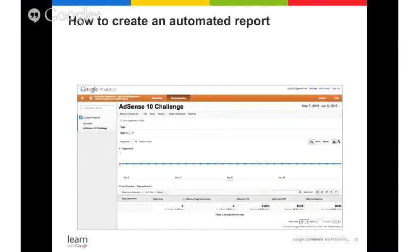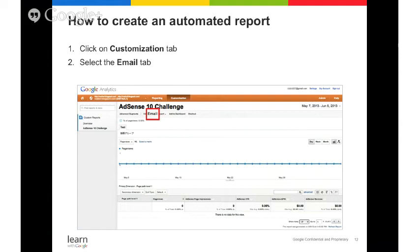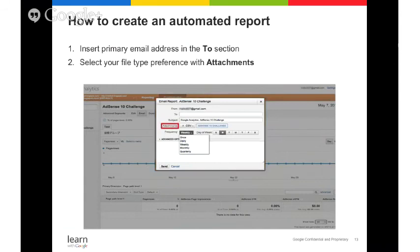There are two ways to set up report automation. The first is to use the custom report notification. Go to Customization and then click the Email tab. A new screen will appear — put your primary email address in the To section, and you can also add multiple email addresses. Then select what type of file you want to receive the information in; we recommend CSV or PDF. Then choose the frequency — weekly, monthly, or another frequency — and you'll get your report sent to your inbox.